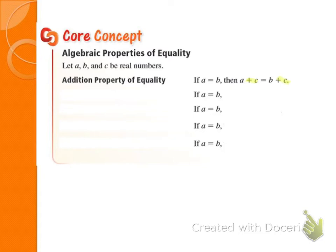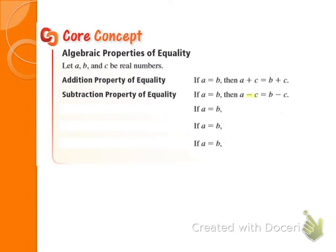The next one is the subtraction property of equality. This one says if you subtract the same number on both sides, your equation stays equal. So you can subtract the same number on both sides — that is the subtraction property of equality.